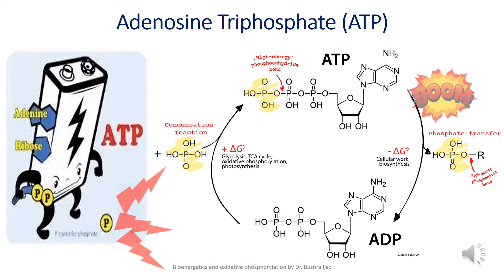Besides ATP, cells also contain other metabolites with large negative free energy of hydrolysis — for example, phosphoenolpyruvate, bisphosphoglycerate, and phosphocreatine. These three high-energy compounds, like ATP, have a high phosphoryl group transfer potential and are good donors of the phosphoryl group. Thio esters also have a high free energy of hydrolysis. Inorganic polyphosphate, which is present within the cell, may also serve as a reservoir of phosphoryl groups with high group transfer potential.